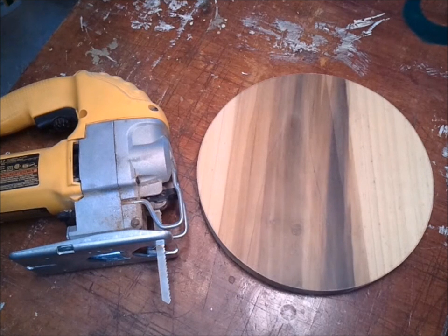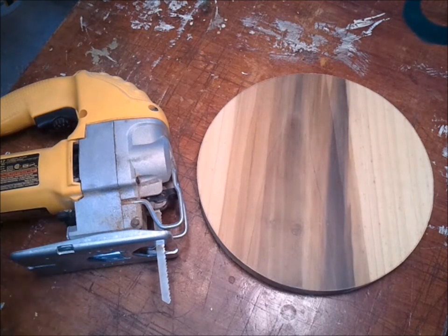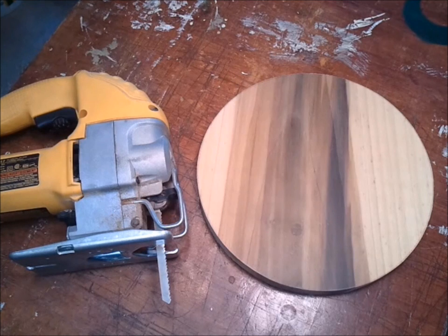If what you're building requires a more perfect circle, you might want to consider using a router instead. I have a video on making a wooden bearing that goes over explicitly how to make a wooden circle very accurately. But for our purposes, a jigsaw and a disc sander will be just fine.